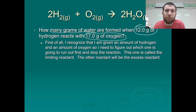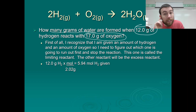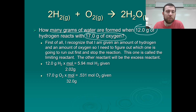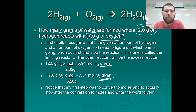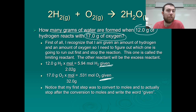Following our steps, step one: convert everything to moles. We've got 12 grams of hydrogen — convert that to moles and we get 5.94 moles of hydrogen. Take the 17 grams of oxygen and divide by its molar mass of 32, giving us 0.531 moles of oxygen. These are our given quantities from the problem.